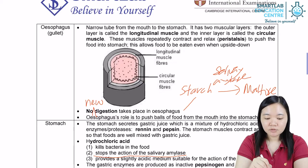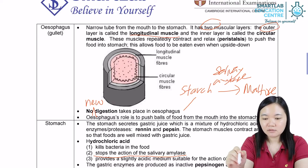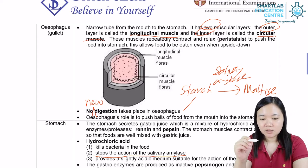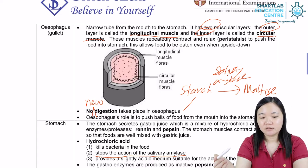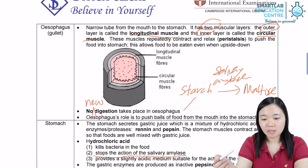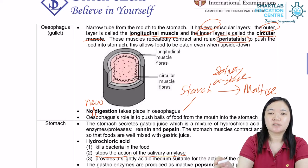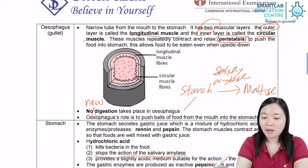The esophagus contains two muscular layers. The outer layer is called the longitudinal muscle, and the inner layer is called the circular muscle. These muscles will repeatedly contract and relax to push the food into the stomach. This contraction and relaxation is known as peristalsis, and it happens all along the alimentary canal.